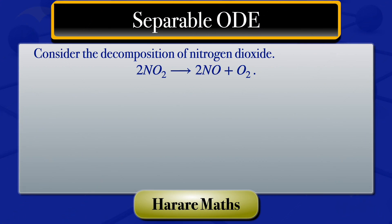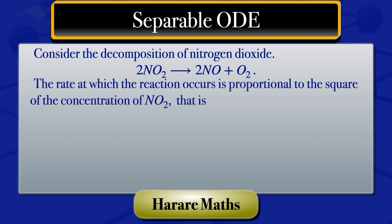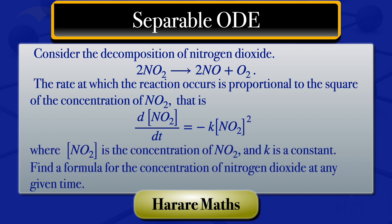Nitrogen dioxide decomposes to give nitrogen monoxide and oxygen. The rate at which the reaction occurs is proportional to the square of the concentration of nitrogen dioxide. That is, the derivative of the concentration of nitrogen dioxide with respect to T equals minus K multiplied by the concentration of nitrogen dioxide squared, where [NO₂] is the concentration of nitrogen dioxide, and K is a constant.